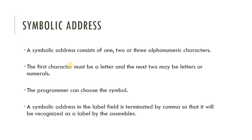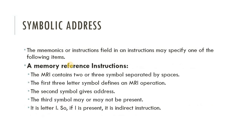A symbolic address consists of one, two, or three alphanumeric characters. To write an address in assembly language there are rules: the first character must be a letter, and the next two may be letters or numerals. Programmers can choose any symbol they want. A symbolic address in the label field is terminated by a colon so that it is recognized as a label by the assembler.